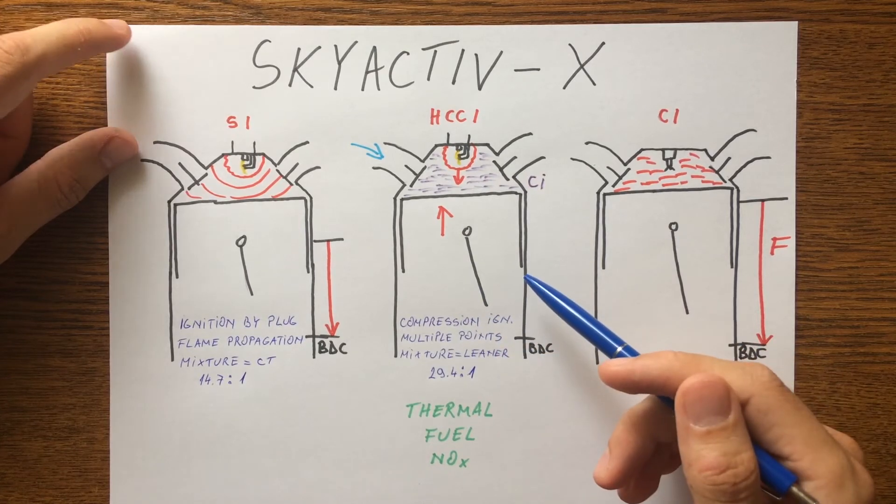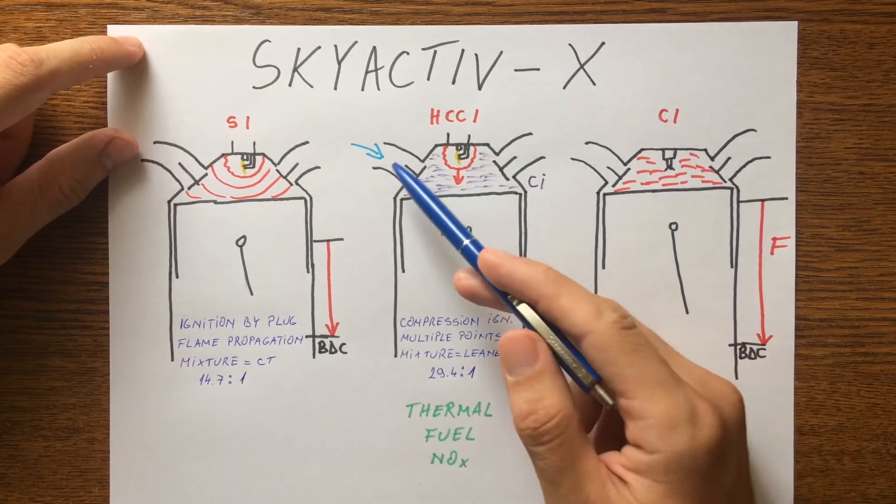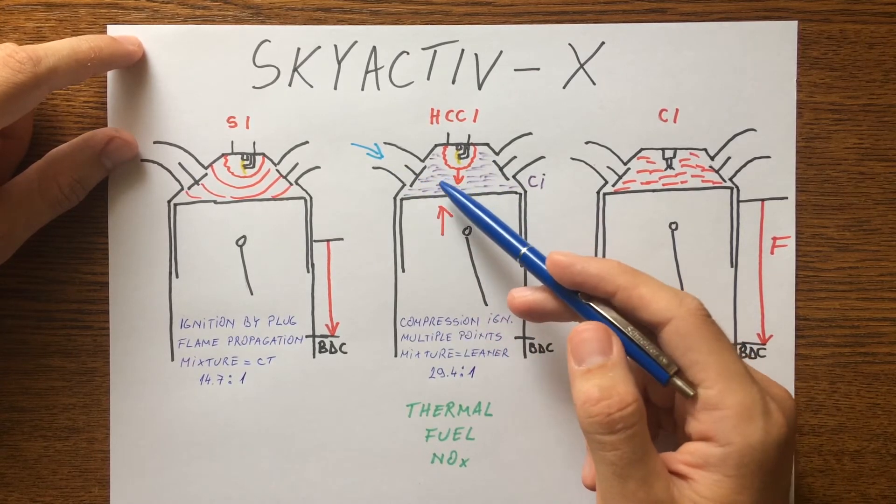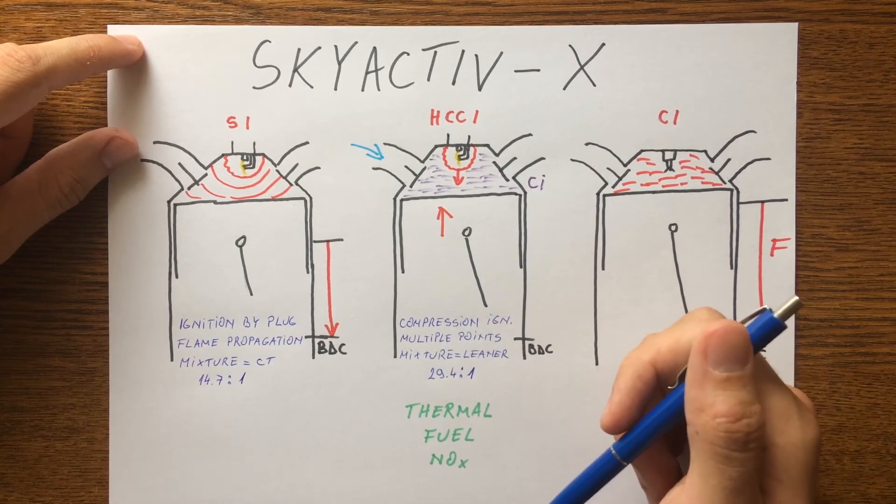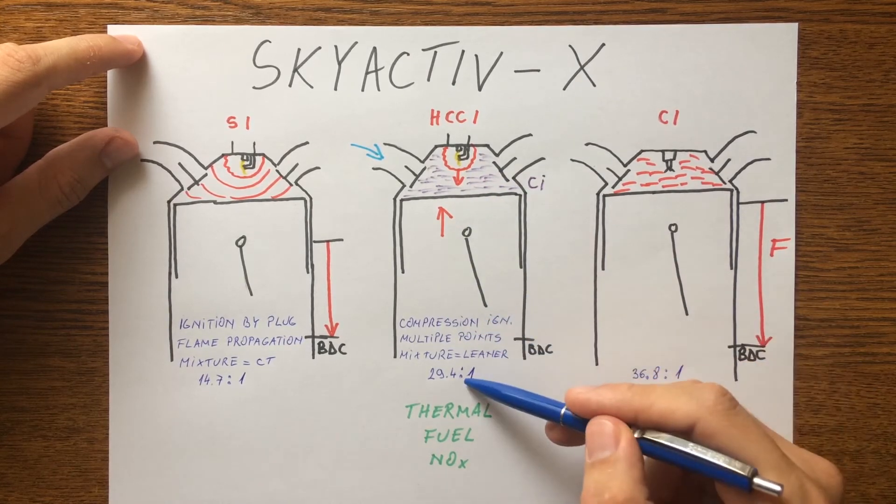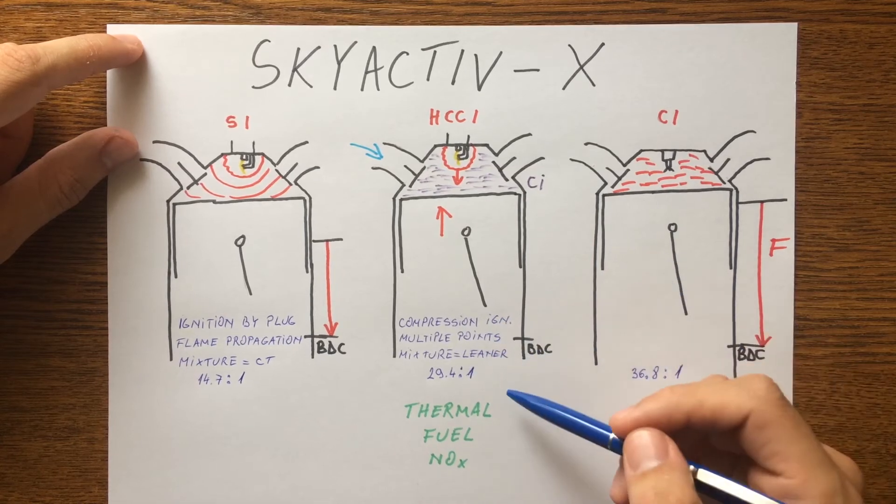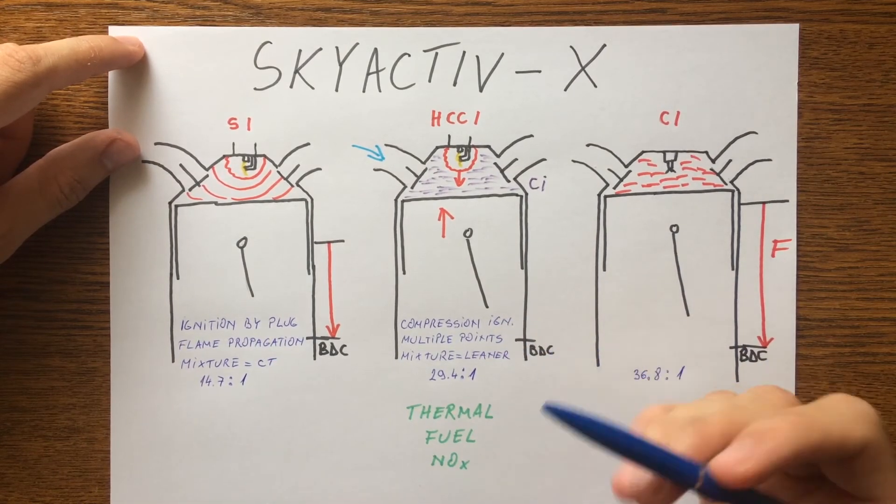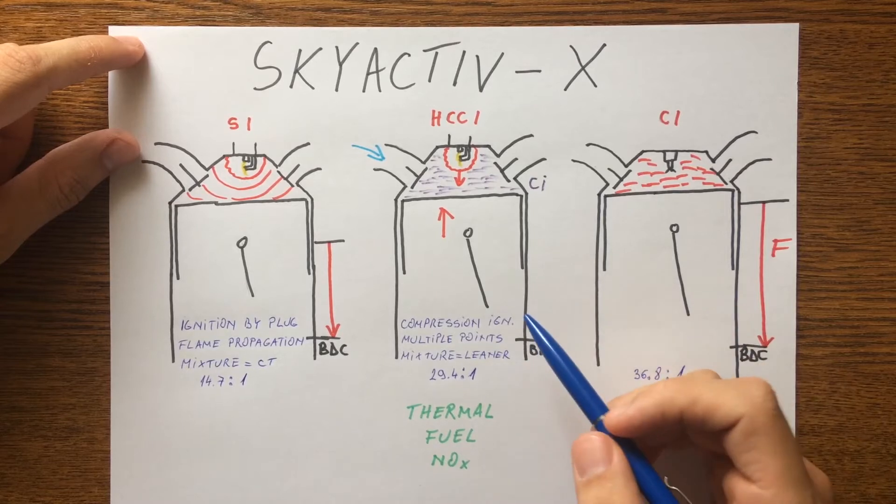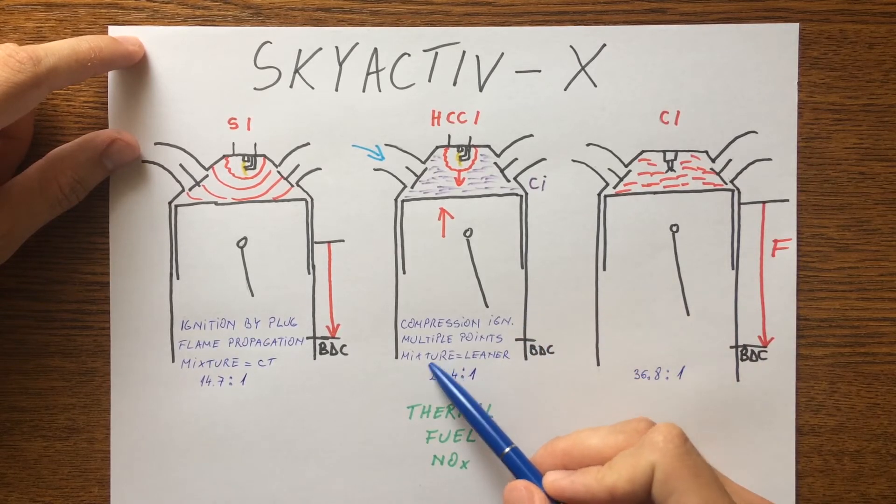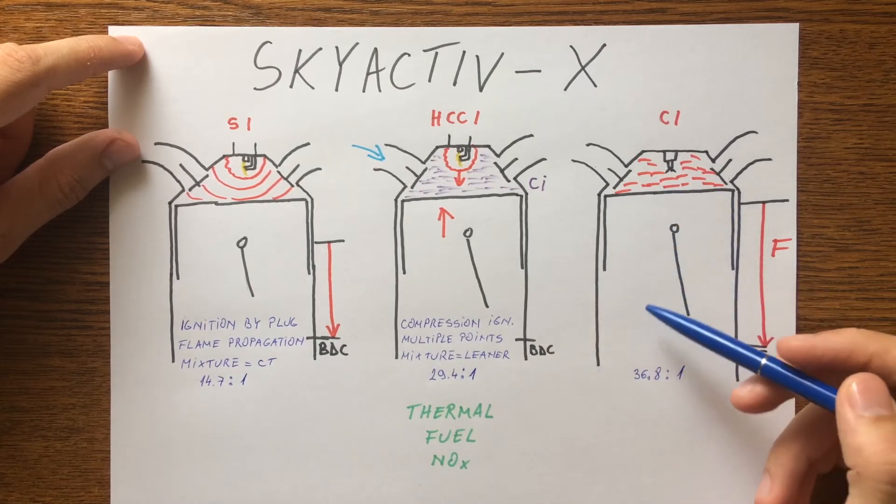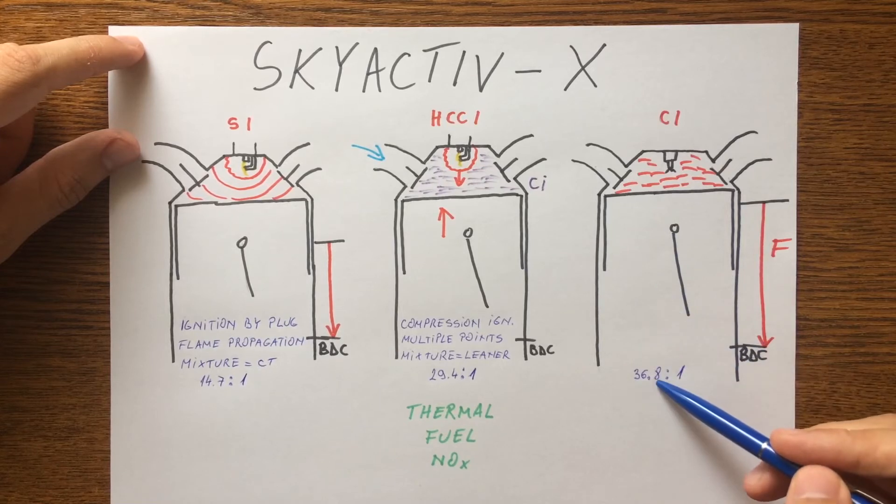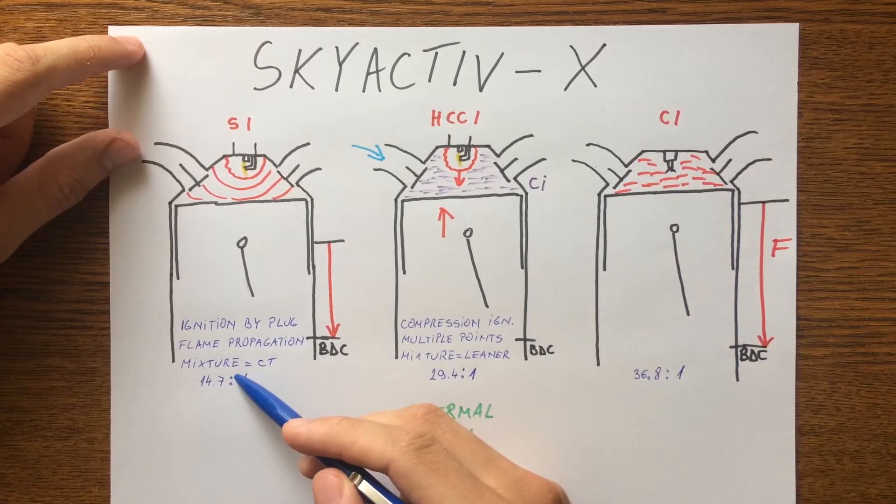It is a combustion method where gasoline and air are completely mixed and ignited by compression temperature and pressure with a very lean air-fuel mixture. In fact, too lean for spark ignition. So the challenge is to achieve an air-fuel ratio of 29.4 to 1. At the compression ignition engine, the air-fuel mixture is two times leaner compared with the spark ignition engine.